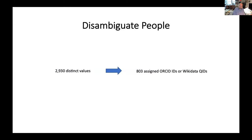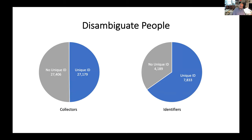The records arrived with 2,930 distinct values referencing people who collected or identified the specimens. We were able to assign 803 unique identifiers to a subset of those values. These unique identifiers were ORCID IDs when the person is living and Wikidata QIDs when the person is deceased. An additional 437 values representing 359 people are reasonably assigned to persons currently living but who do not yet have an ORCID ID. To do this, we engaged 34 people who are mostly bat experts from 13 countries, and they found they could associate about half of the records to a unique identifier for specimen collector and about two-thirds for specimen identifier.